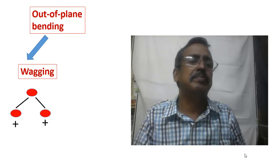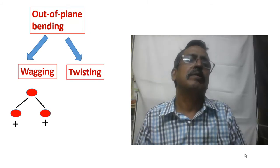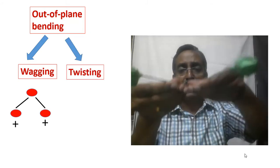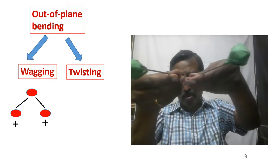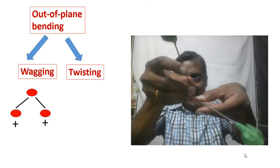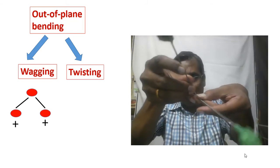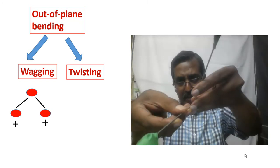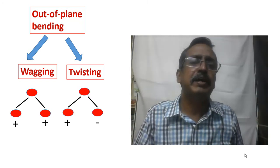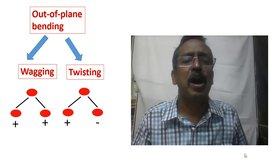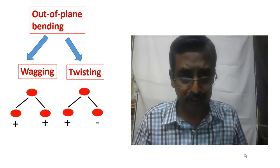The next type of out-of-plane bending is twisting. Here, when one bond goes up the other bond goes down, and when this bond goes down the other bond goes up. These are indicated by two signs: on one atom you find a positive sign, and on the other atom you find a negative sign.